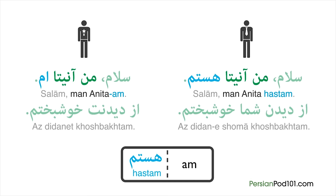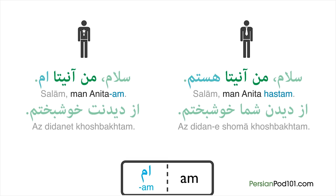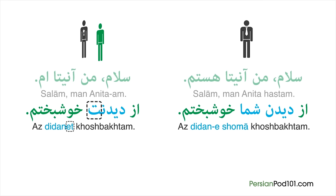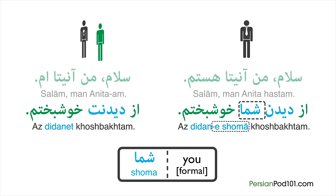'Hastam' means 'am,' and it's added to the end of the formal introduction instead of just 'am.' 'Am' is actually just the short version of 'hastam,' which is the to-be verb conjugated for the first person. Pay attention to how 'nice to meet you' changes — from 'az didanet khoshbakhtam' to 'az didaneshoma khoshbakhtam.' 'Didanet' and 'didaneshoma' are different. 'Didanet' is used when speaking informally to only one person, formed by adding 'et,' meaning 'your,' to the end of 'didan,' meaning seeing or meeting. In the formal version, instead of 'et,' we add 'e-shoma.' 'Shoma' is the formal word for 'you' and can be used whether you're speaking to one person or a group.